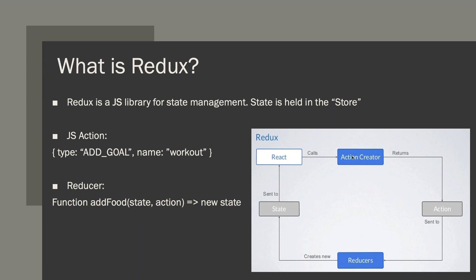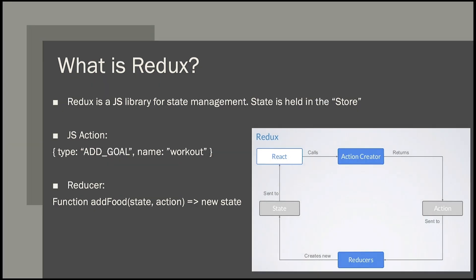What happens is the front end calls an action creator. An action creator is simply a function that returns an action. An action is just a JavaScript object that has a type — that type contains a string that represents the goal of that action, for example 'add goal'. This action creator, once called from the front end, sends an action to a reducer. A reducer simply takes the current state of the application and that action, and returns a new state based on that action. Of course there's more complicated logic such as API calls and middlewares, but in a nutshell this is how Redux works with React.